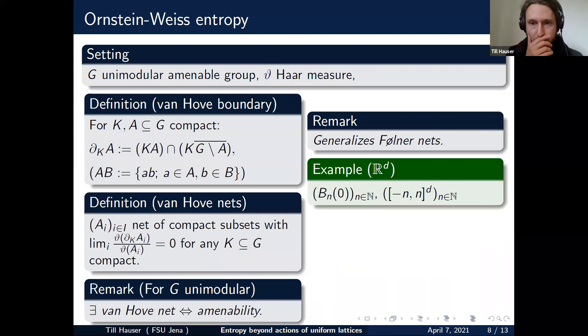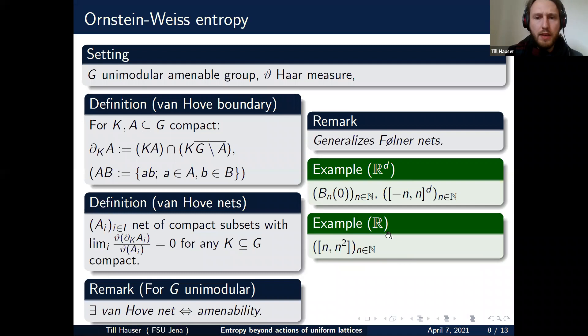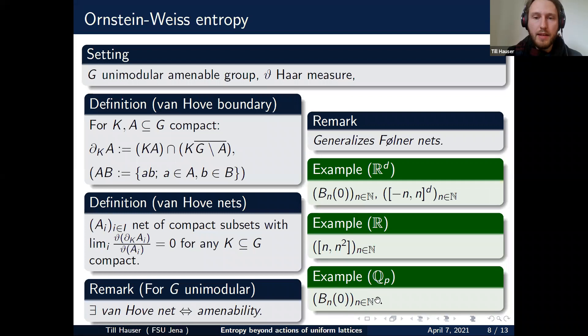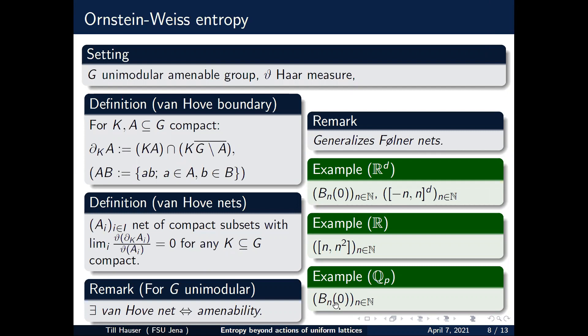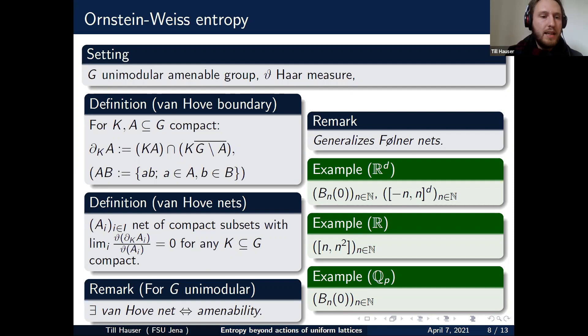Here are some examples of van Hoven nets: blown-up balls or cubes in R^d; an example in R that is not centered and grows differently in different directions but is still a van Hoven net; and an example in Q_p where you can use balls of radius N. Be aware that balls in a general unimodular amenable group don't have to form compact sets, so in general such balls are not van Hoven nets.